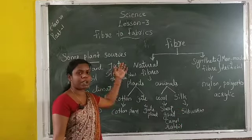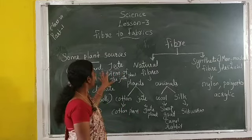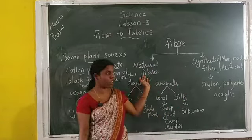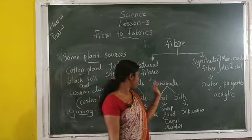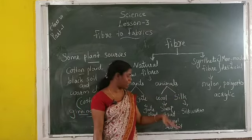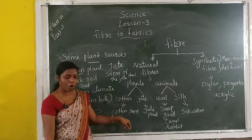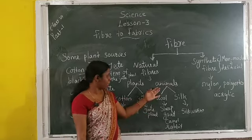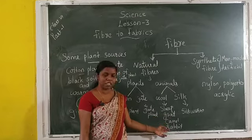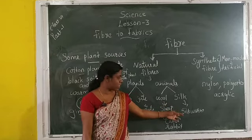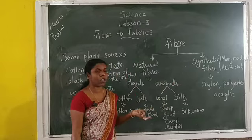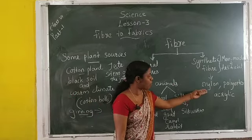To recap: fiber means a group of threads. Fibers are of two types — natural fibers and synthetic fibers. Natural fibers are obtained from plants and animals. Plant examples: cotton and jute. Animal examples: wool and silk. Cotton is obtained from the cotton plant, jute from the jute plant. Wool-giving animals include sheep, goat, camel, and rabbit. Silk is obtained from the silkworm. Synthetic fiber is man-made or artificial — examples: nylon, polyester, and acrylic.